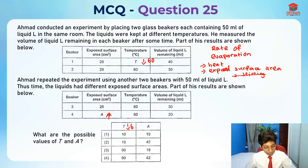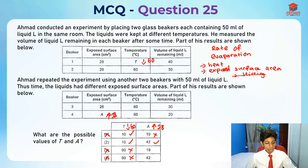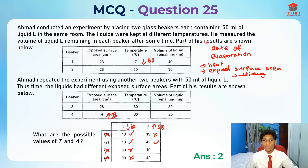So T, the temperature for beaker 1, is less than 60, and A, the exposed surface area for beaker 4, is more than 28. Looking at the answer options: options with T equal to 10 — 10 is less than 60, so that works, but 90 is not, making options 3 and 4 wrong. For A, 19 is not more than 28, while 42 is, making option 1 wrong. So the answer to this question is option 2.